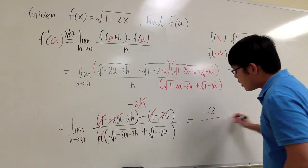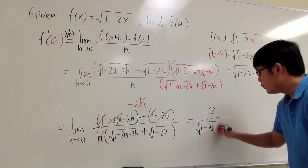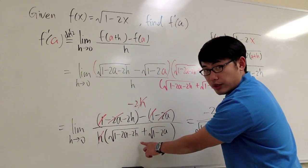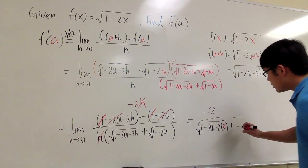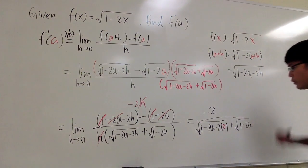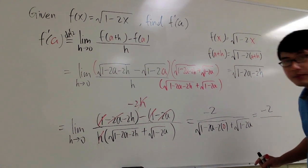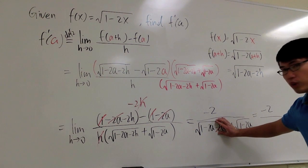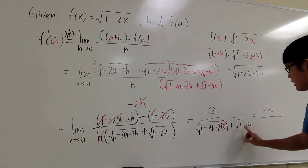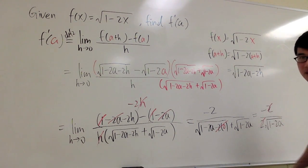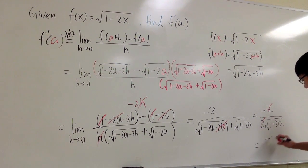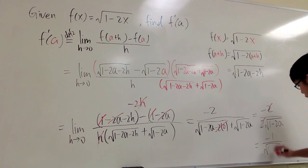We can now plug in 0 into all remaining h. We have negative 2 on top. Over square root of 1 minus 2a, with minus 2 times 0, which is 0, plus square root of 1 minus 2a. So on the bottom, we have two copies of square root of 1 minus 2a, giving 2 times square root of 1 minus 2a. The 2's cancel, and the final answer is negative 1 over square root of 1 minus 2a.